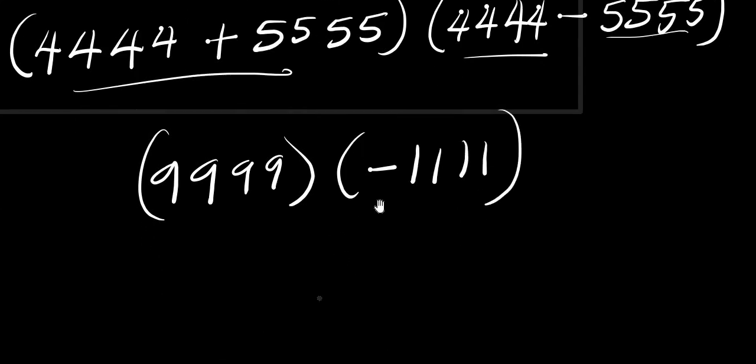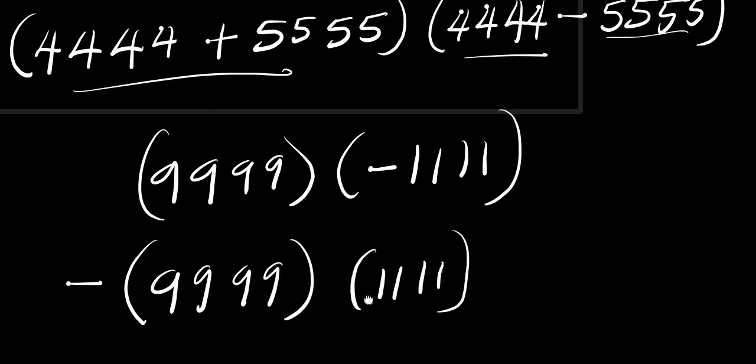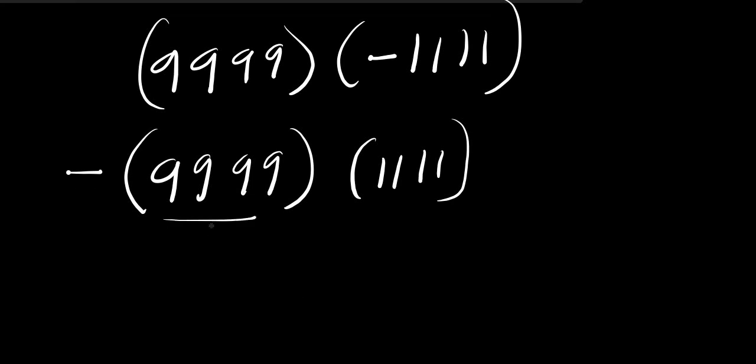The next thing you are going to do is to take out this negative sign, so you can have it as negative times 9999 times 1111. We can as well rewrite this as (10000 - 1) times 1111.